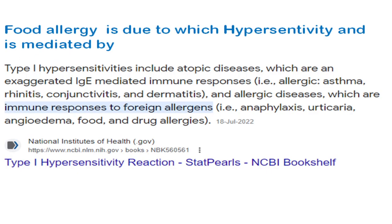The next question: food allergy belongs to which type of hypersensitivity, and which antibody mediates it? The correct answer is Type 1 hypersensitivity, mediated by IgE antibody. IgE mediates immune responses including allergy, asthma, conjunctivitis, and dermatitis, and also mediates allergic responses to foreign antigens including drug allergies and food allergies.